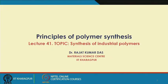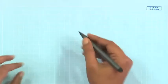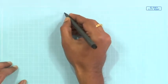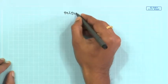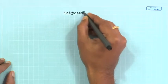Welcome back. We have been talking about synthesis of several commercially important polymers, specifically the step growth polymers. In the last class we finished with the synthesis of polyimides, and today we are going to start by talking about the synthesis of polyurethanes. The topic remains the same: it is in general the synthesis of industrial polymers.